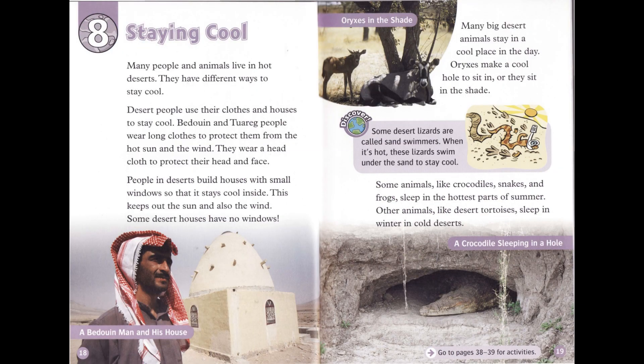Chapter 8: Staying Cool. Many people and animals live in hot deserts and have different ways to stay cool. Desert people use their clothes and houses to stay cool. Bedouin and Tuareg people wear long clothes to protect them from the hot sun and wind, and they wear a headcloth to protect their head and face. People in deserts build houses with small windows so that it stays cool inside, keeping out the sun and wind. Some desert houses have no windows.